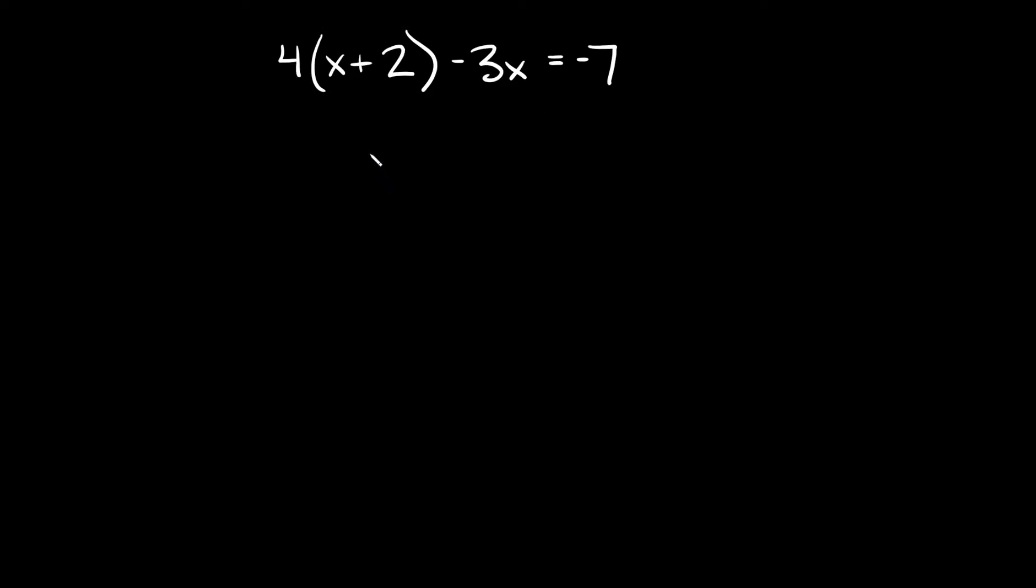So the first thing you're going to do here is distribute. That means you're going to take this four and then you're going to multiply it by this first term and then this second term inside of the parentheses. So I'm going to have four x. Four times x is four x and then four times two is equal to eight.